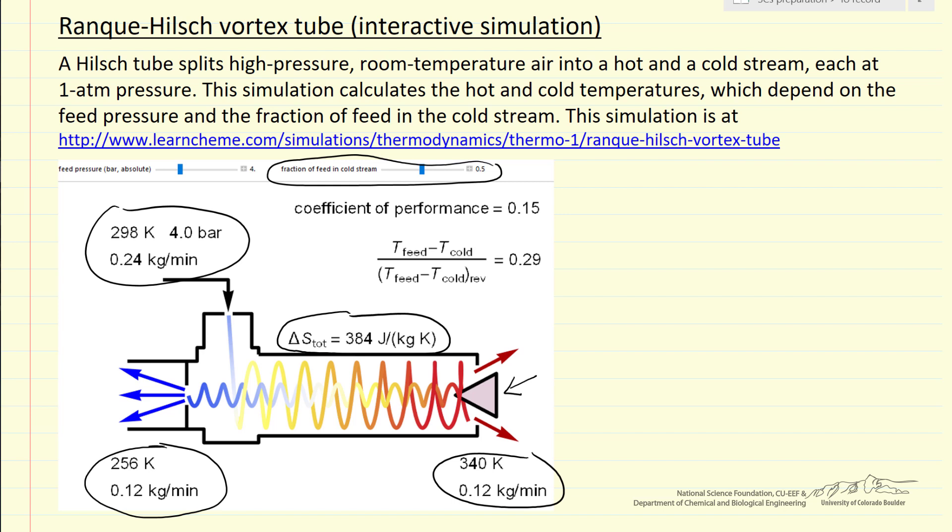So this simulation calculates efficiency, that's what this number is, and this is the change in temperature between the feed and the cold stream divided by what change in temperature would be if we did an adiabatic expansion reversibly. And so this does not take into account what fraction is cooled, it just says if we had gas, we expanded it reversibly and adiabatically.